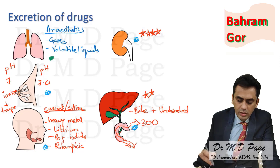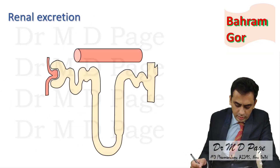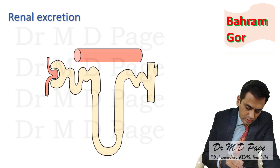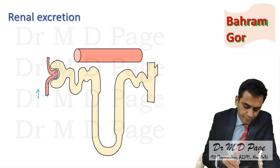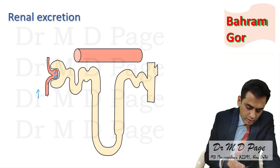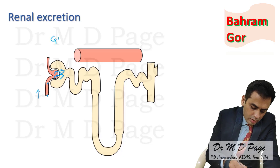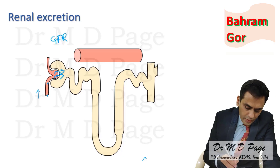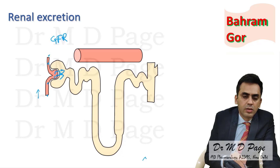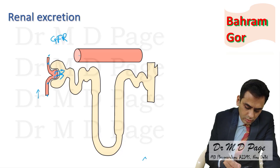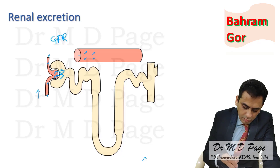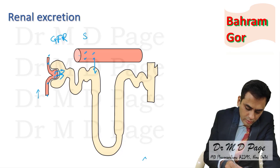Now, in renal excretion: consider a drug molecule which reaches the glomerulus via the afferent arteriole. After reaching the glomerulus it gets filtered — this is known as glomerular filtration rate (GFR). Some drug may remain in the afferent arteriole, reach the peritubular capillaries, and get secreted there — this is known as secretion.